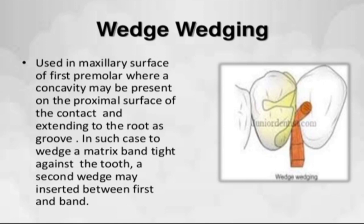Wedge wedging uses two wedges — one from lingual and one from occlusal. It is used for the maxillary first premolar because there is a mesial concavity present. The wedge helps make the matrix band tight against the tooth due to that mesial concavity. This is also an MCQ topic: why is wedge wedging needed for the maxillary first premolar? Because of the presence of mesial concavity.